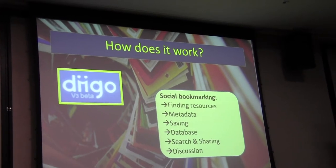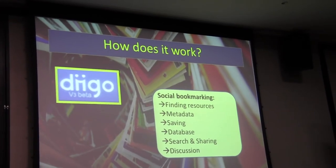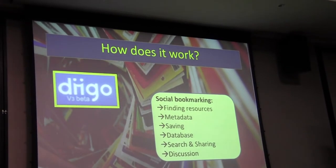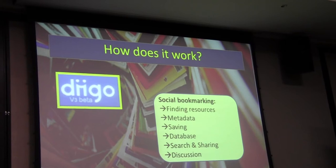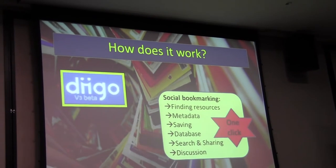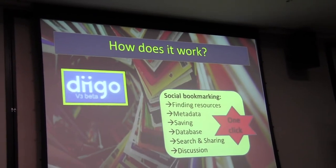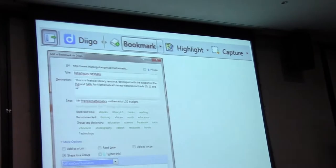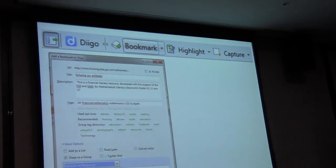So you can go and search for mathematics and get all my thousands of mathematics resources, sciences, life sciences. If you go to my library and you can do it all with one click, how does it work?